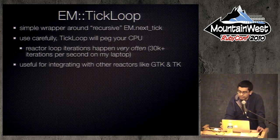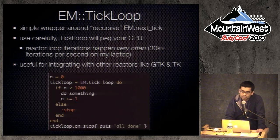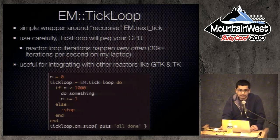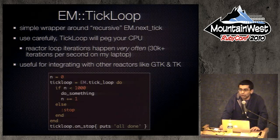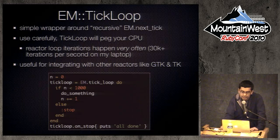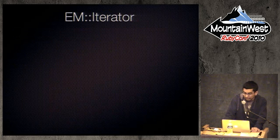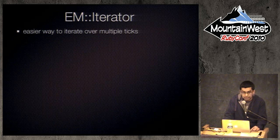Keep in mind: iterations happen very frequently — on this laptop you'll probably hit 30,000 iterations per second. There's not much code you actually want running 30,000 times a second; it'll just peg your CPU. This is mostly useful for integrating with other reactor loops. The tick_loop is a nicer wrapper — it gives you APIs like passing in another block that gets invoked when the tick loop stops, and you can also call stop manually on it.